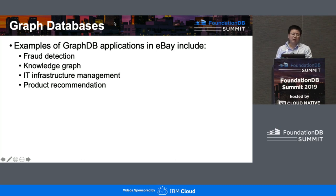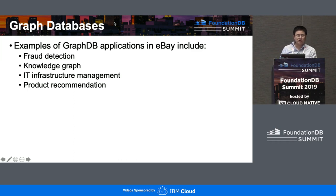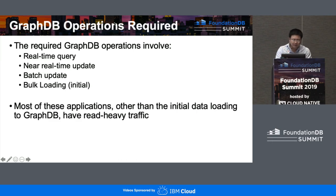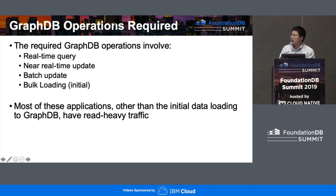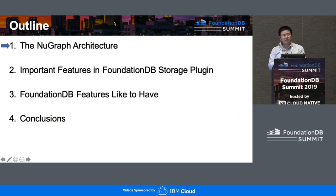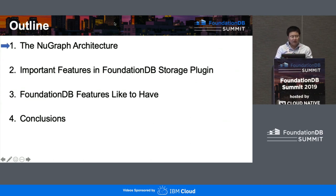In eBay, we have many applications that use GraphDB, including fraud detection, knowledge graph, IT infrastructure management, and product recommendation. This GraphDB requires real-time query, near-real-time update, batch update, and bulk loading at initial construction. Most of these applications exhibit a read-heavy traffic pattern. For the rest of the presentation, we'll go over the NewGraph architecture, detail important features we developed for the FoundationDB storage plugin, identify some desired improvements from FoundationDB, and finally the conclusion.